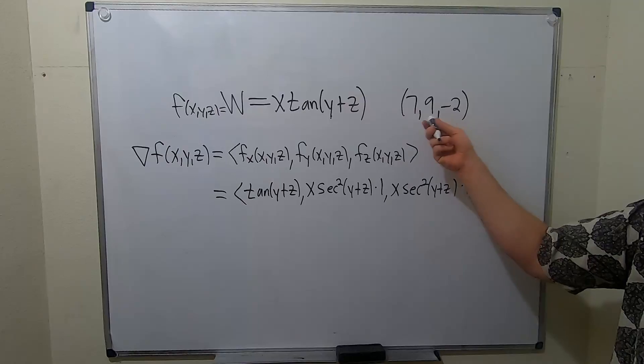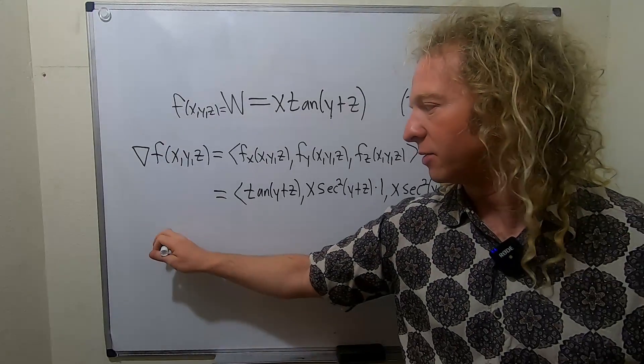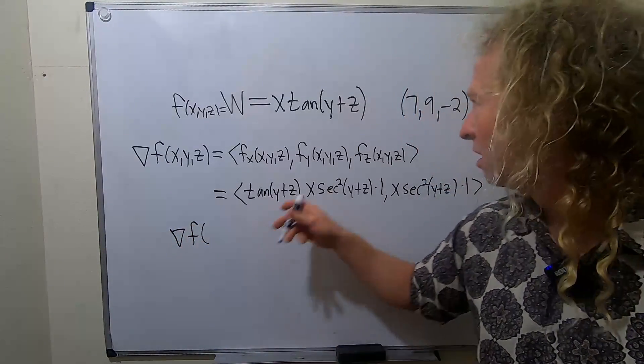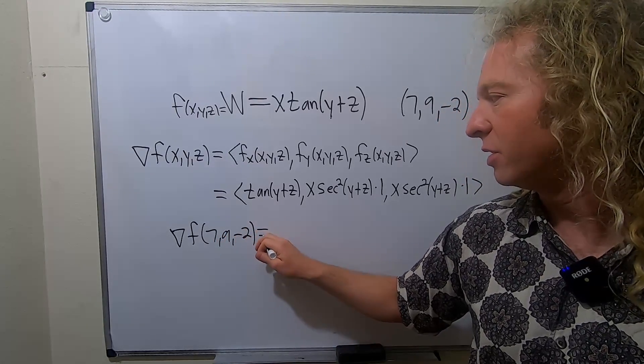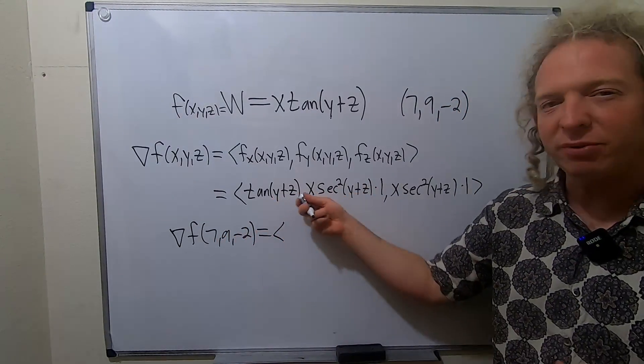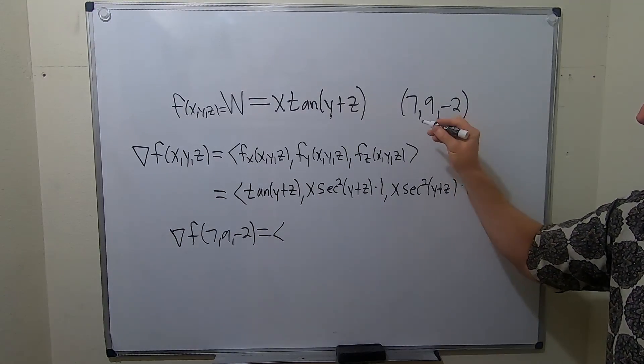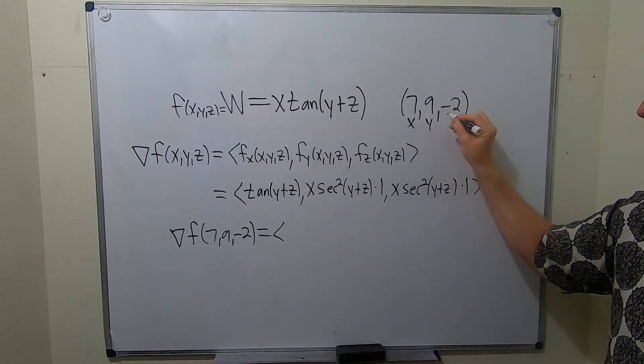All we have to do now is plug in the numbers and we have the gradient. So the gradient at the ordered triple 7, 9, negative 2. This is equal to, let's see, tangent of y plus z. Let me go ahead and label stuff here. This is x, y, z.